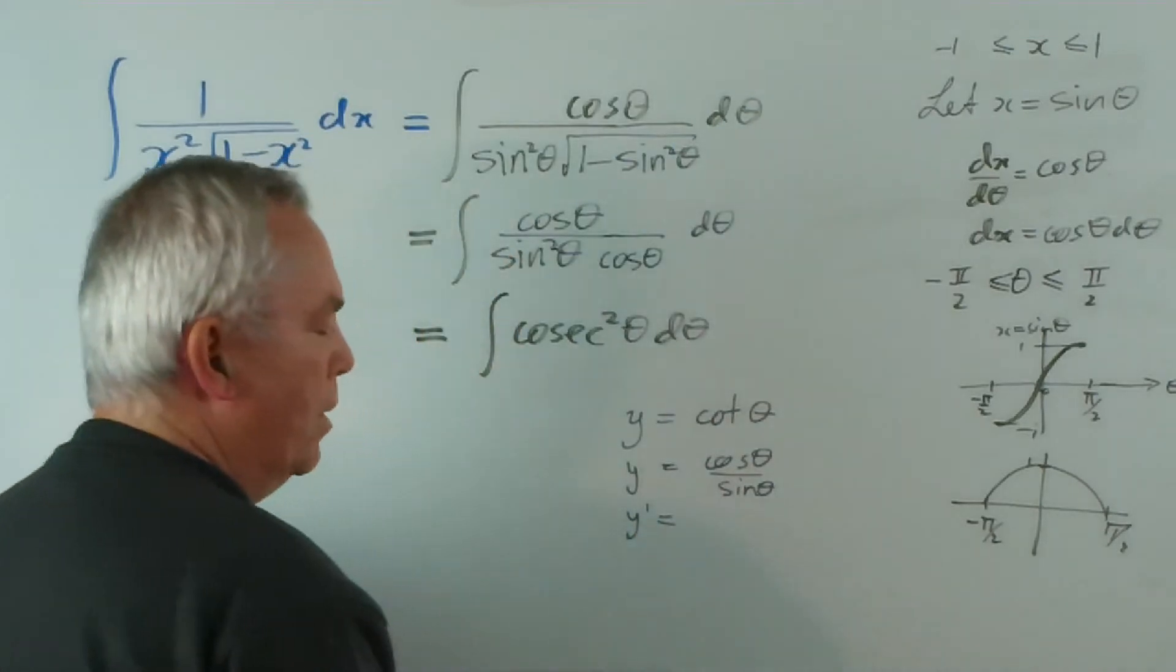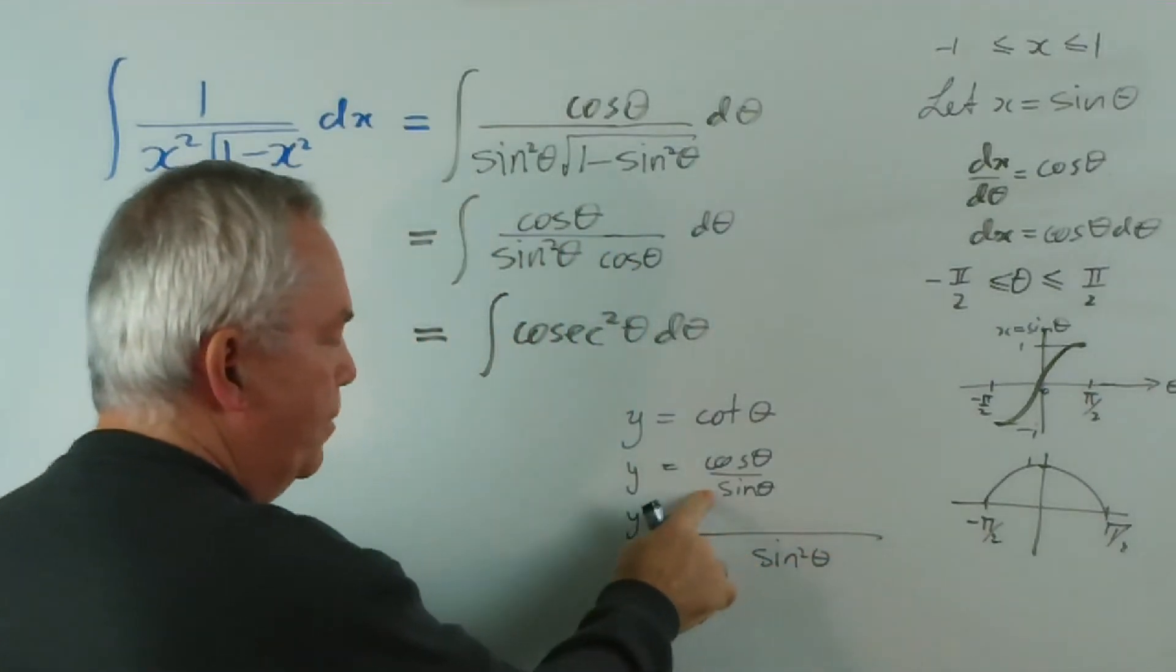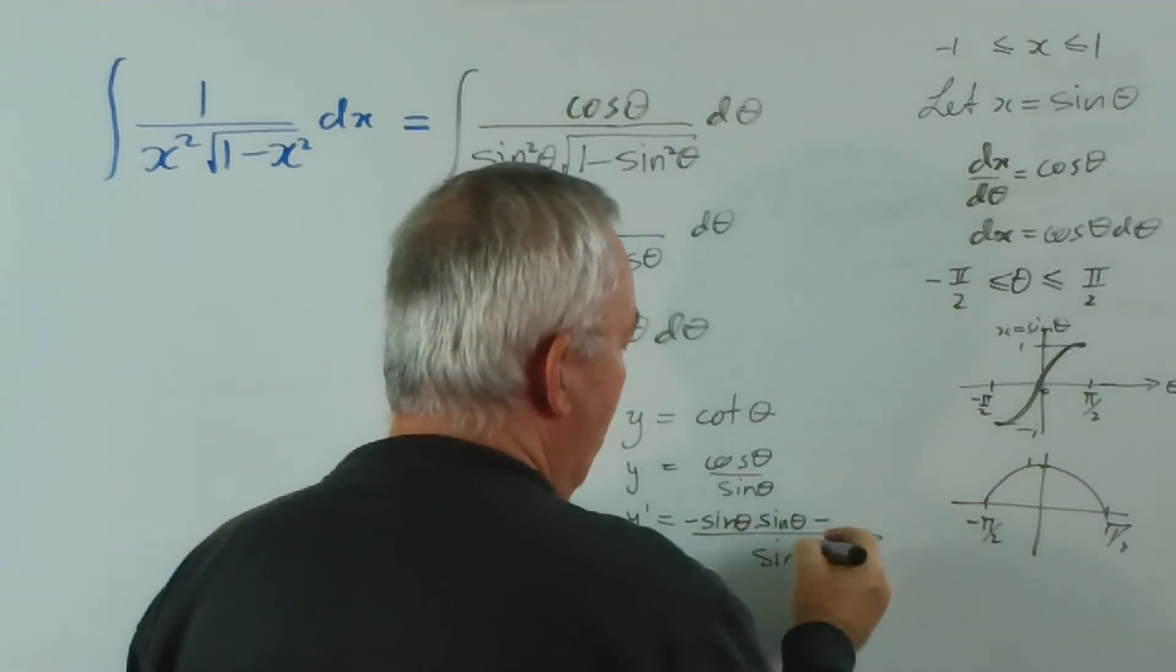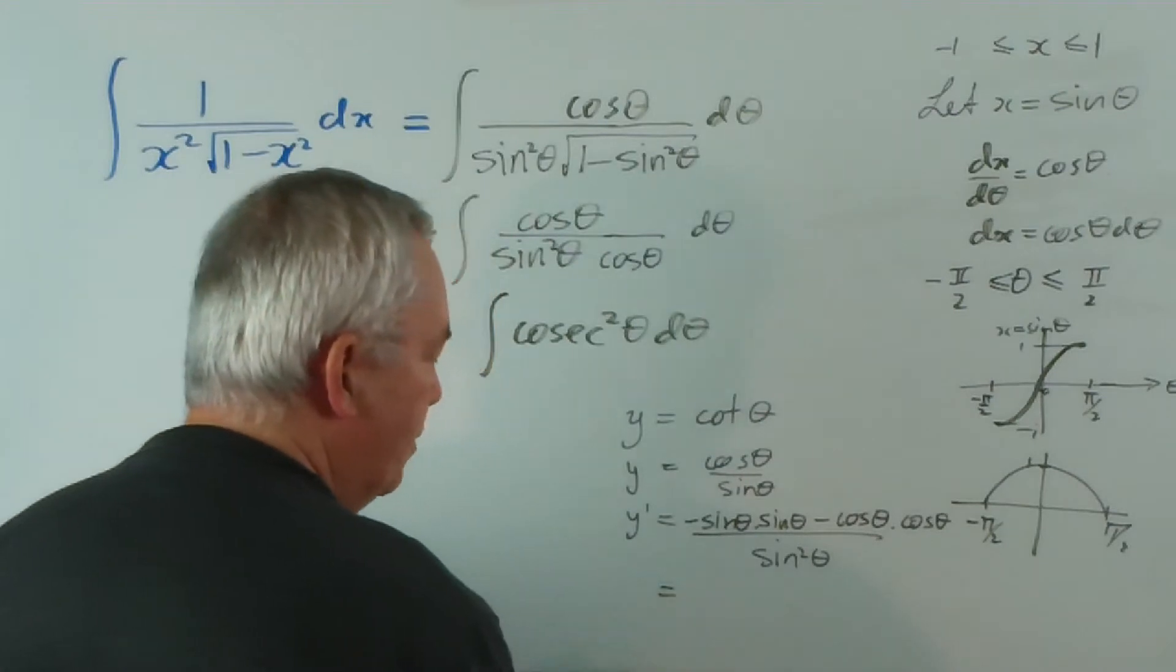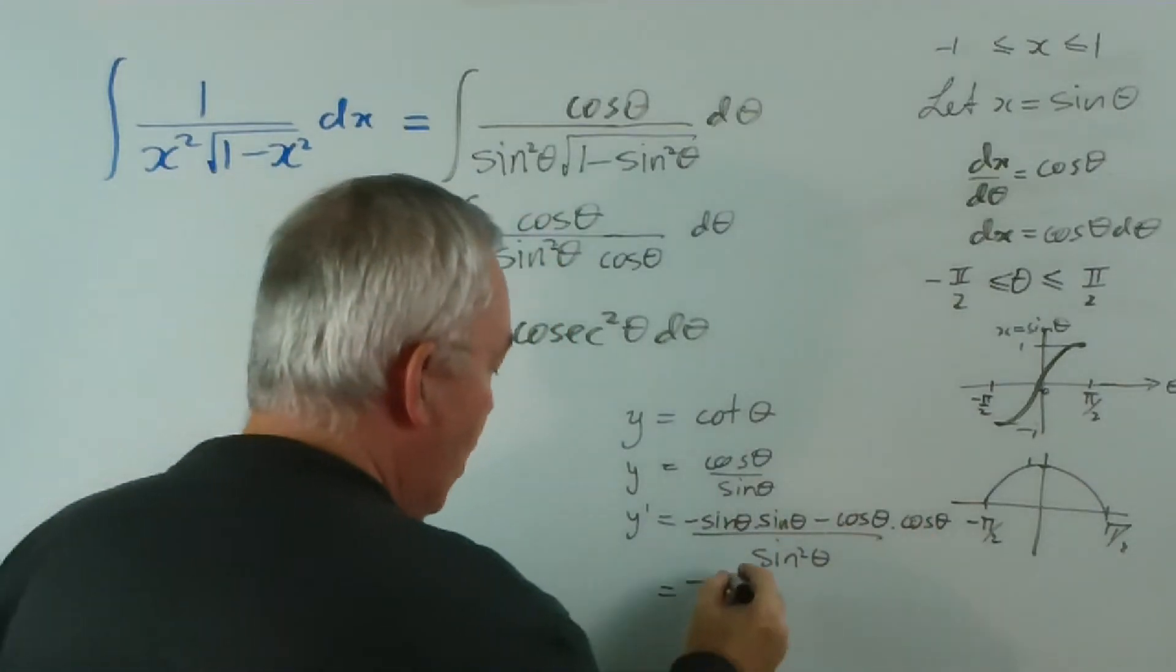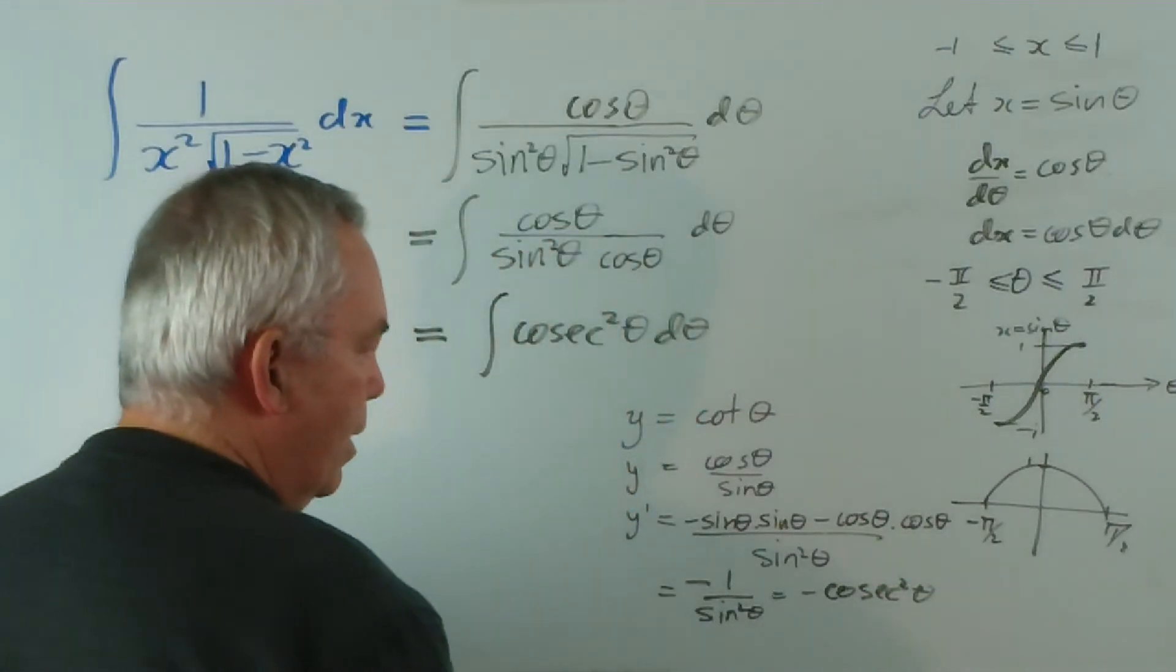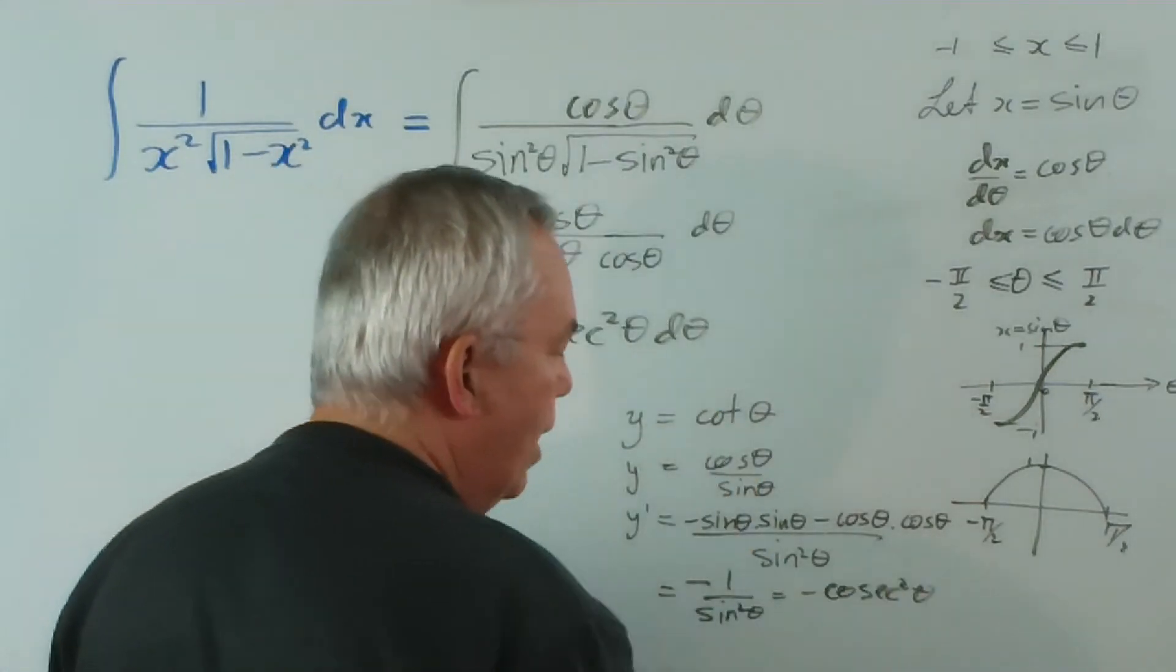What is it? Well, using our quotient rule, we're going to have sin²θ on the bottom and we're going to have the derivative of cos θ times the bottom minus the derivative of the bottom times the top. Now, interestingly, taking out the negative sign, we're left with sin²θ + cos²θ, which is 1, and 1/sin²θ is -cosec²θ.